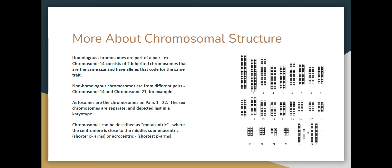Chromosomes can be described as metacentric, where the centromere is close to the middle and your Q arms and P arms are more similar in length; submetacentric, where you have shorter P arms because the centromere goes a little closer to the top; and acrocentric. Chromosome 10 is one of those acrocentric chromosomes where the P arm is really, really short. The reason this is important is that there are some errors that only happen with the acrocentric chromosomes because the P arms are so small that they're more error prone. They're more prone to make certain types of mistakes.